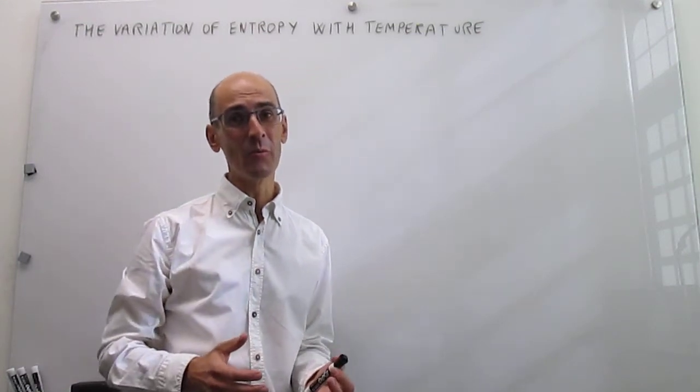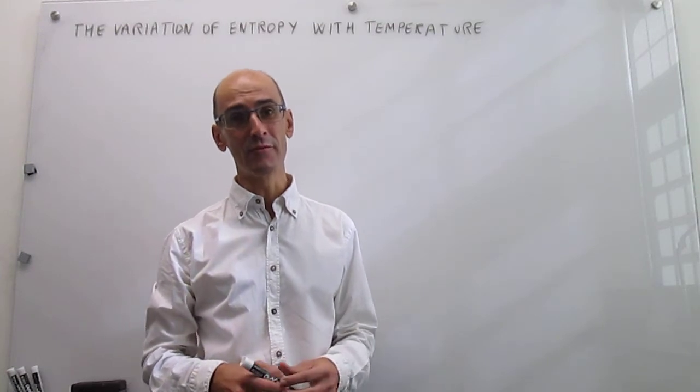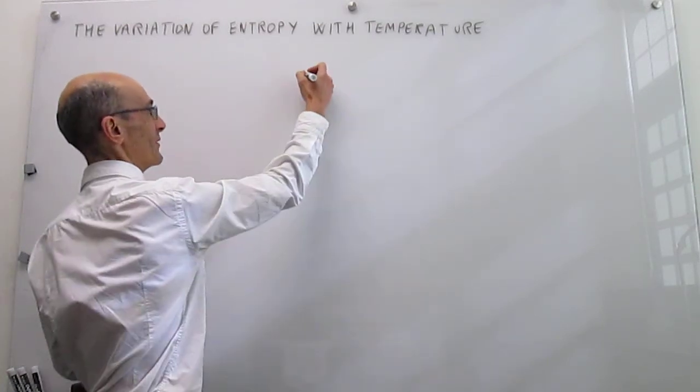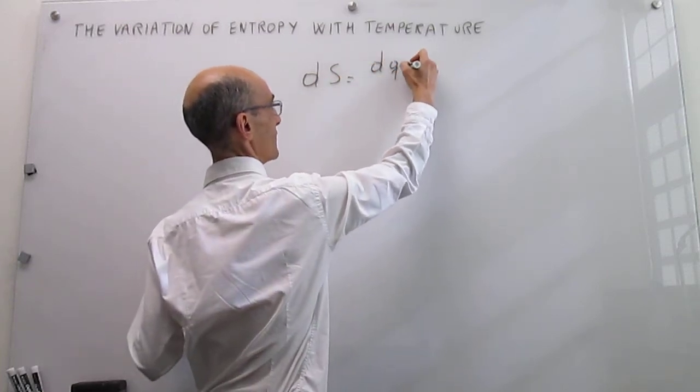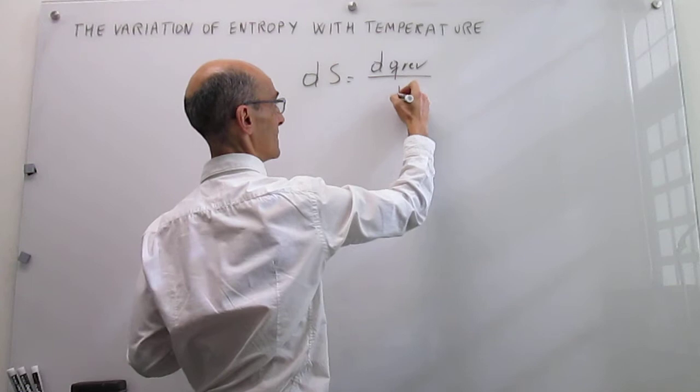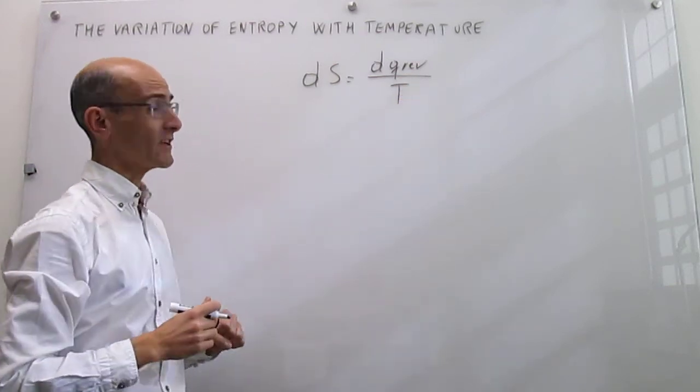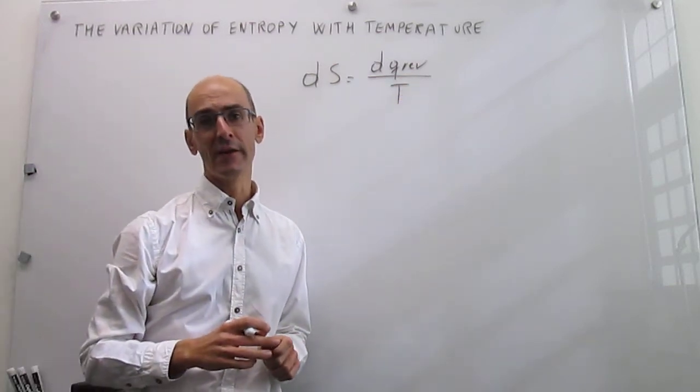Let's recall what the thermodynamic definition of entropy is. Our thermodynamic definition is that a change in entropy is equal to the reversible heat, or reversible energy transfer as heat, divided over the temperature.